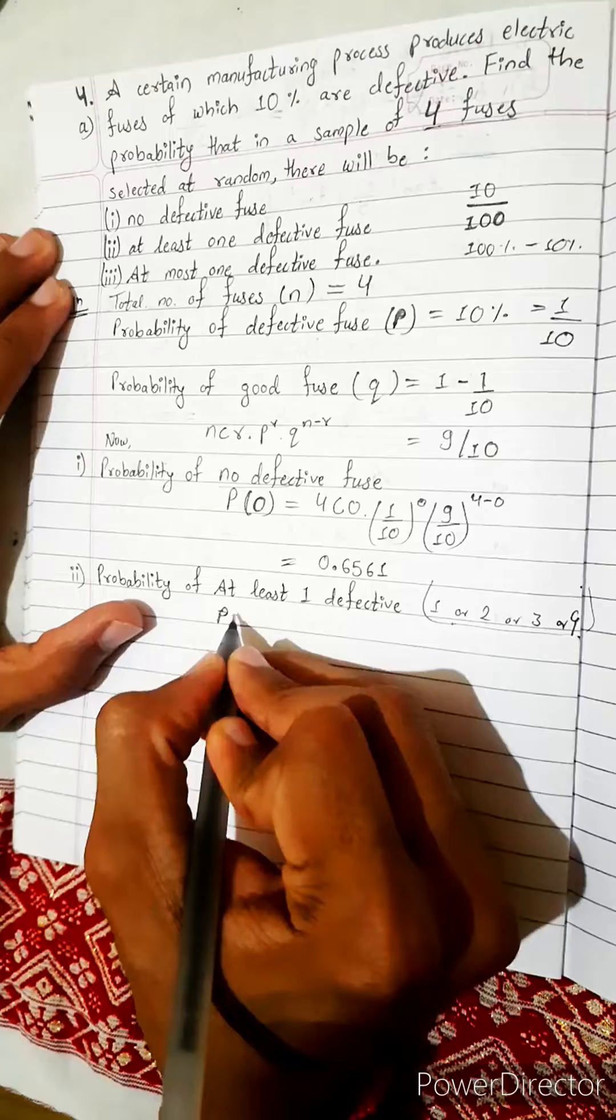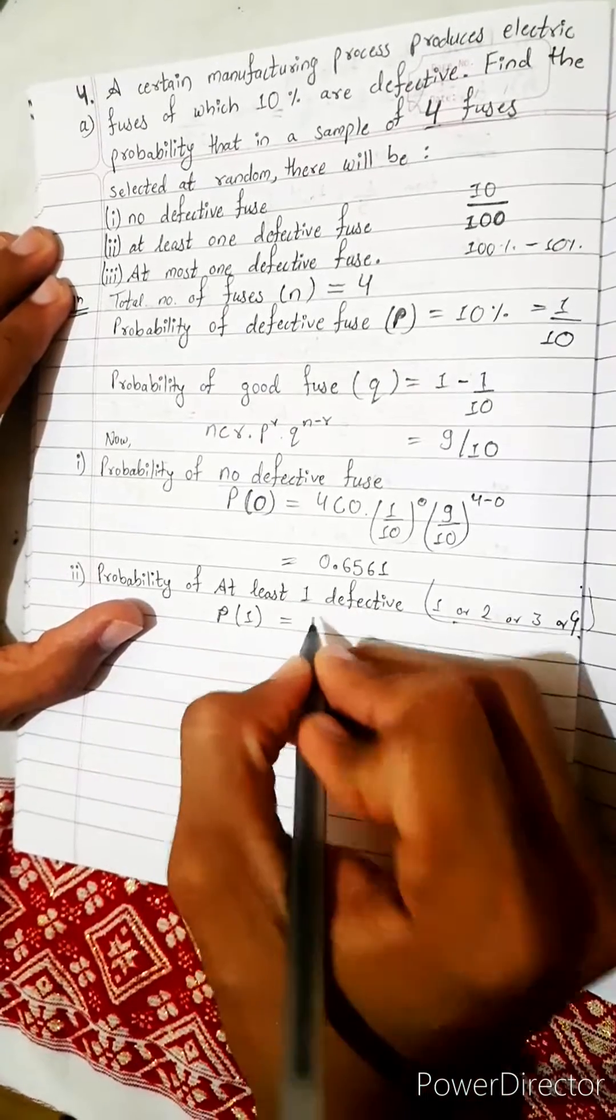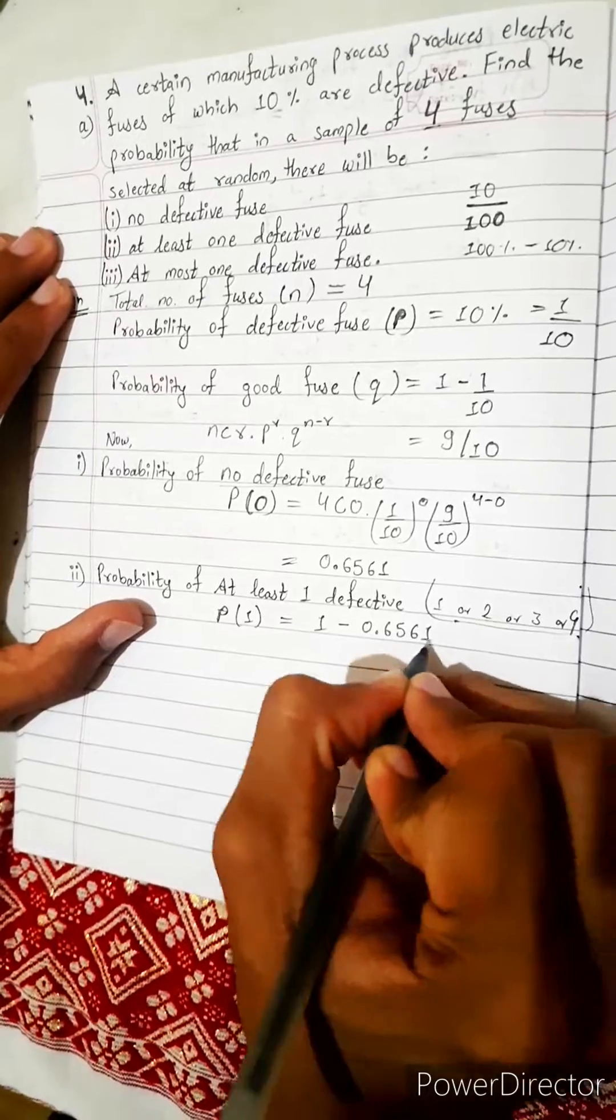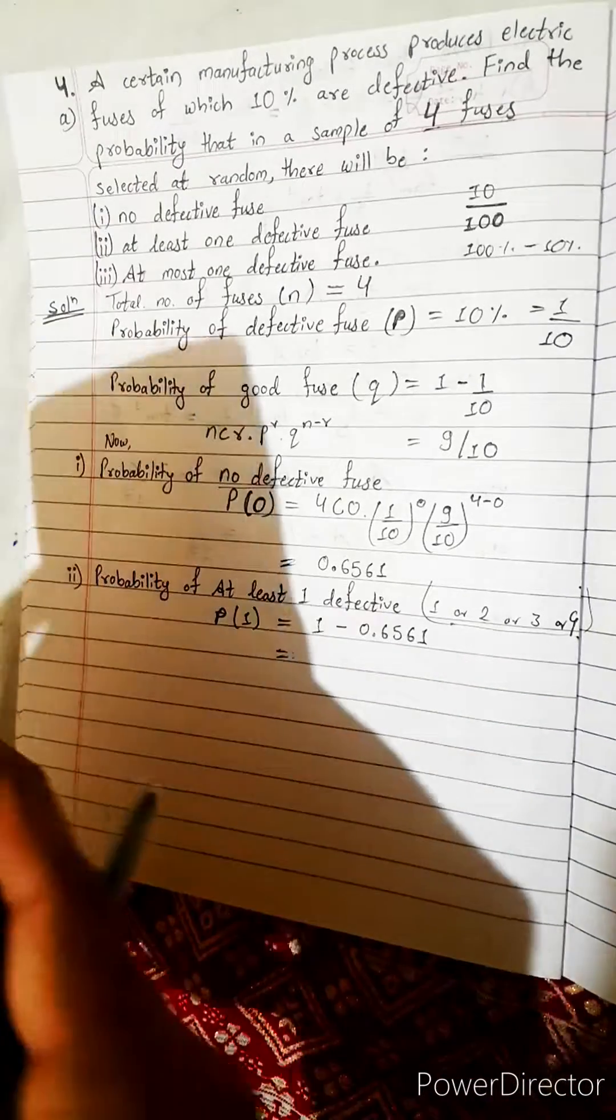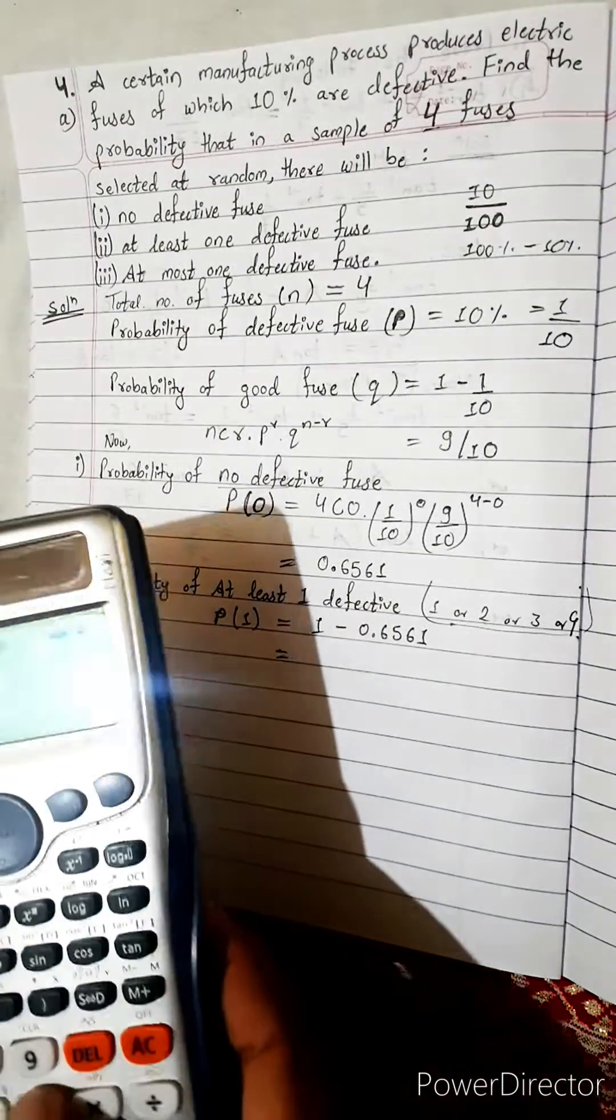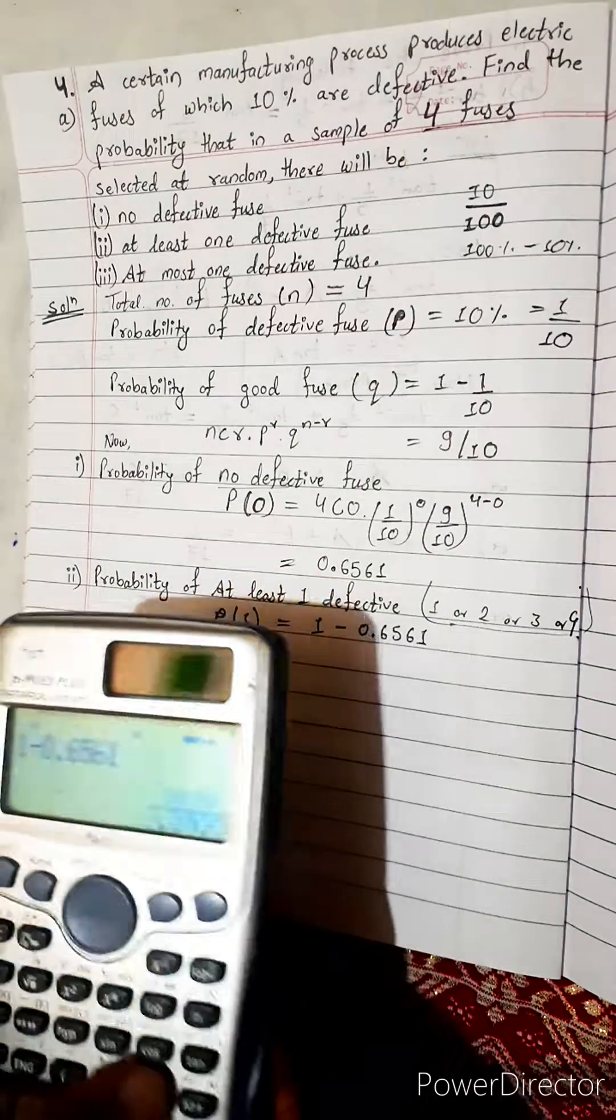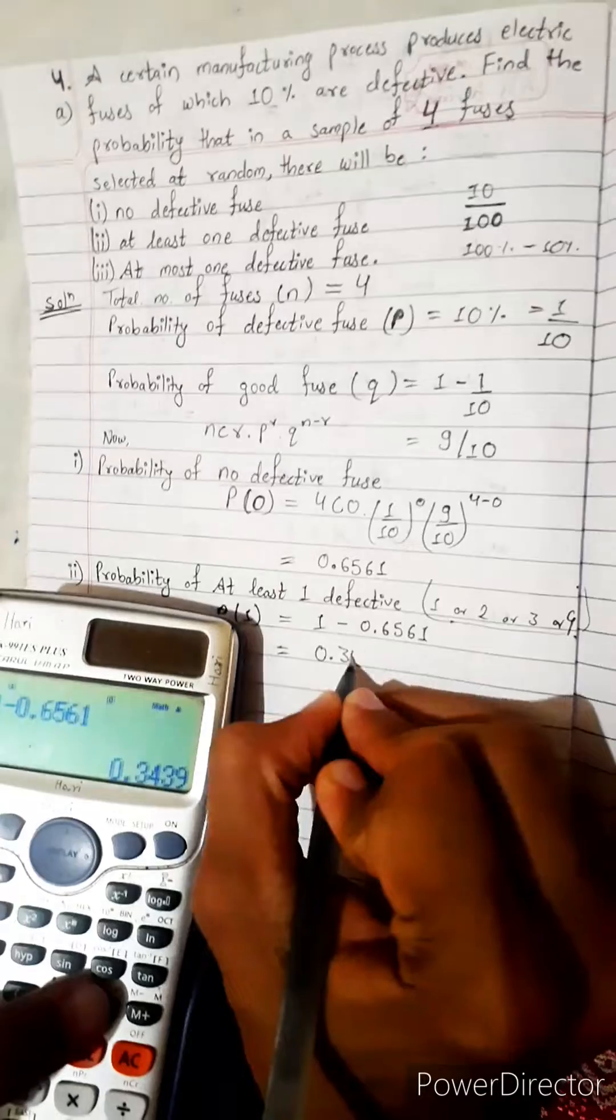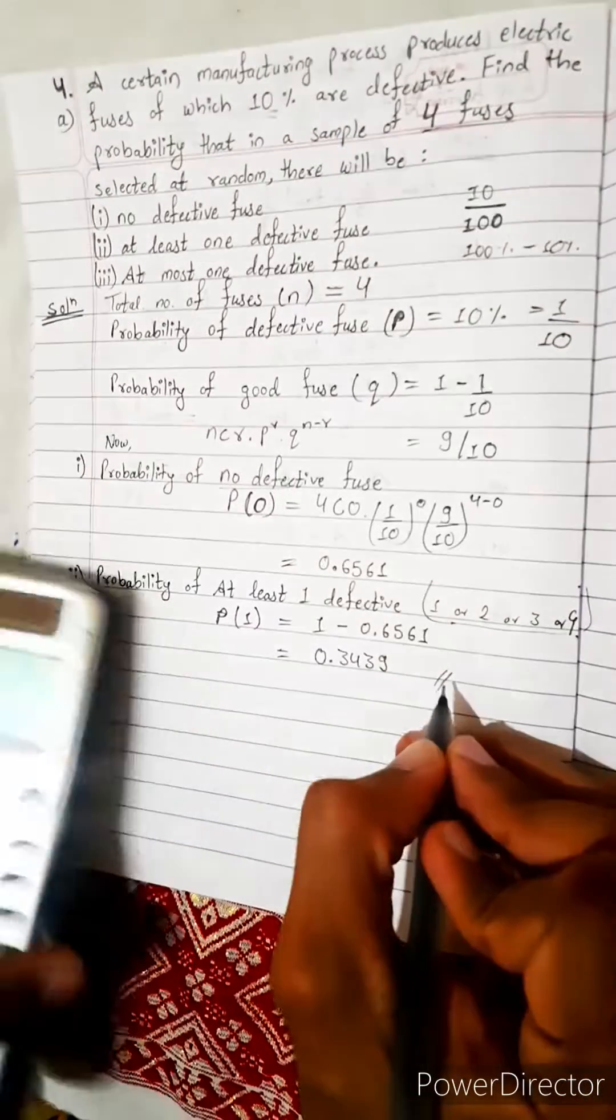Suppose P1. We can use formula also, you can use direct also. 1 minus 0.6561. We got 0.3439.